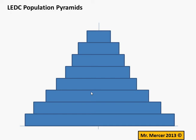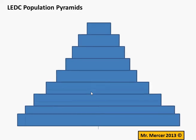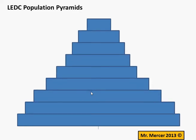Every new generation of children that is born will add a new layer to the bottom of the graph. And as time goes by, people die and fall off the top of the graph. A bit like this — a new generation is born, adding a new layer to the bottom of the graph, pushing the rest of the population up.